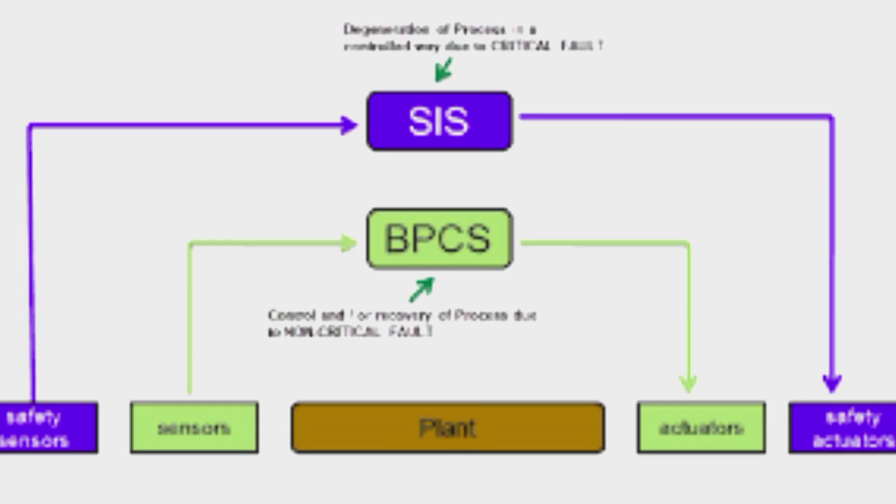The second level of integration is peer-to-peer communication between the safety controller and the process controller. This is also a key aspect of integration. Information from one controller needs to be communicated to its peer quickly in order to anticipate process startup. All data at the lowest level of process and safety IOs can be transferred to a higher level of operations.